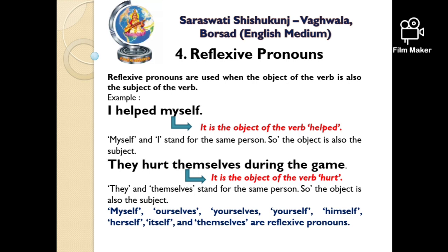See the examples again: 'I helped myself' — 'help' is the verb; 'They hurt themselves' — 'hurt' is also the verb. So keep it in mind: the reflexive pronoun comes after the verb. The reflexive pronouns are: myself, ourselves, yourself, yourselves, himself, herself, itself and themselves.